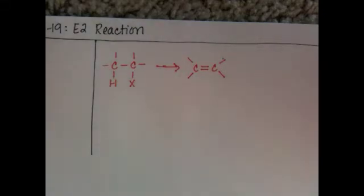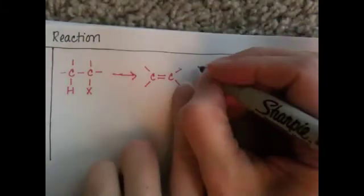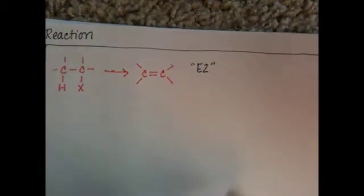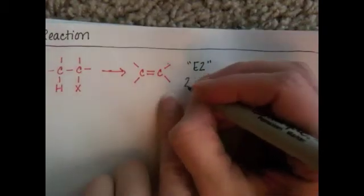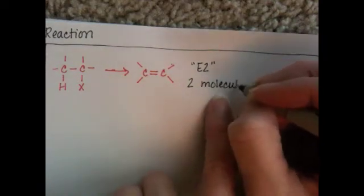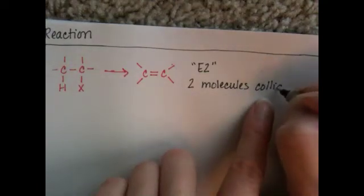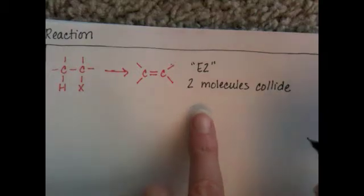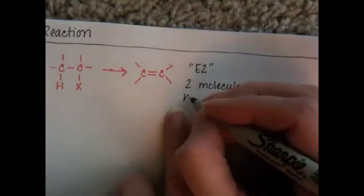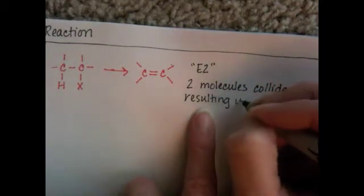Again, we call this the E2 mechanism. And in the E2 mechanism, we have two molecules colliding, just like SN2 is two molecules colliding. And the collision of the two molecules results in elimination.